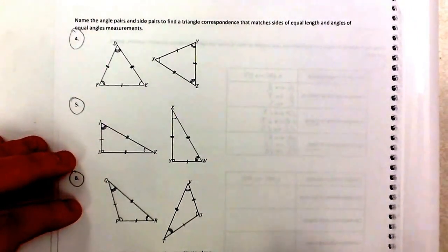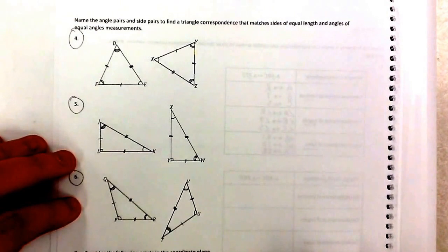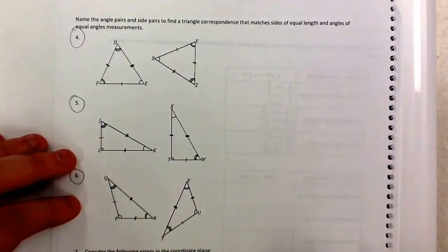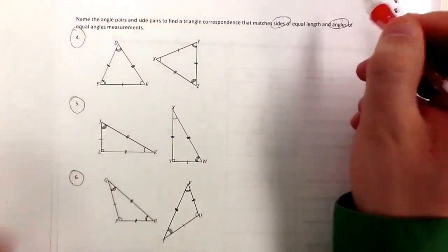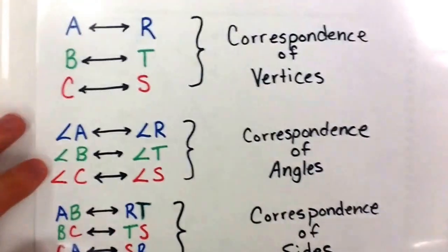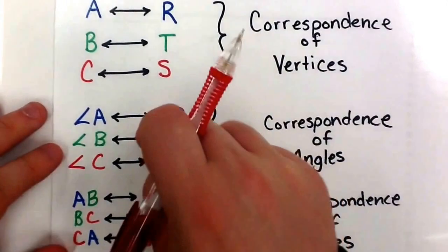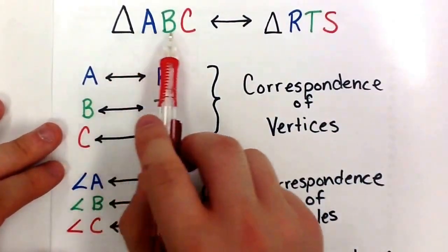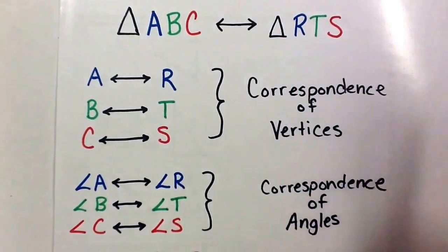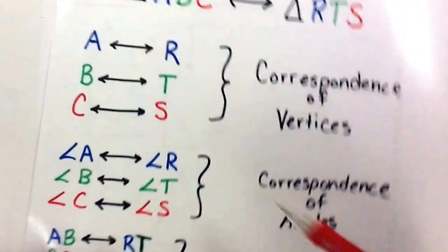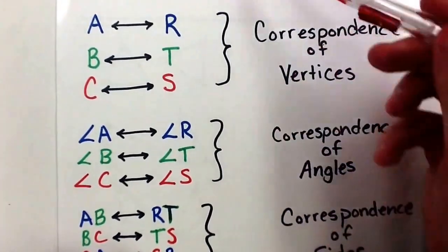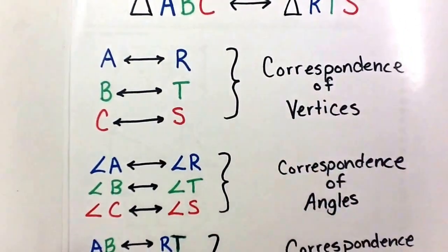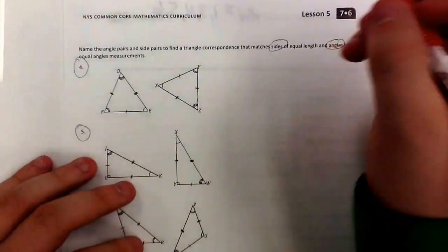For numbers 4, 5, and 6, it says to name the angle pairs and side pairs to find a triangle correspondence that matches sides of equal length and angles of equal measure. We don't need to do vertices — just angles and sides, plus the triangle correspondence statement at the top. So there are three things we need to do for each of these problems.